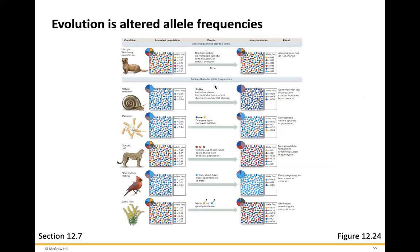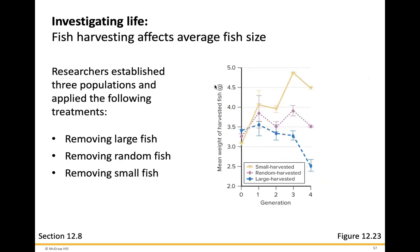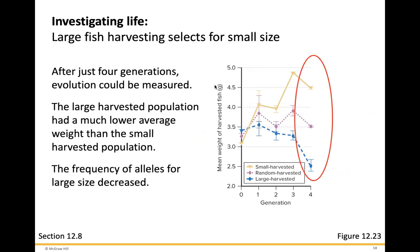Migration causes gene flow and ultimately reduces genetic differences between populations. Evolution by means of natural selection has practical applications, such as establishing fishing regulations. For three years, humans have been removing only large fish from a population. Researchers established three populations with the following treatments: removing large fish, removing random fish, and removing small fish. After just four generations, the large-harvested population had much lower average weight than the small-harvest population, and the frequency of alleles for large size decreased.